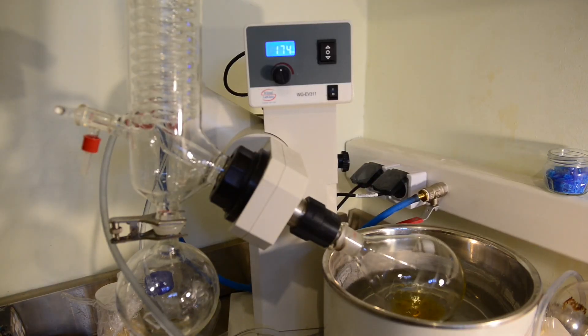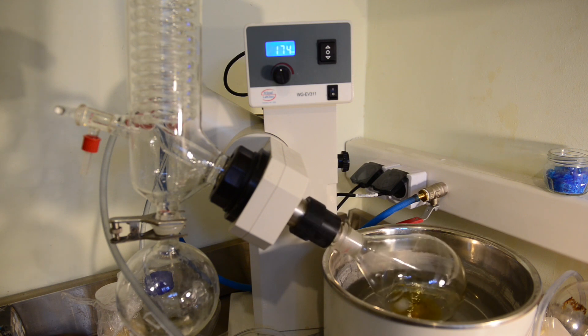Now we are starting to evaporate the chloroform from the mixture. We have decided to use a rotary evaporator. As we have filtered directly to the evaporation flask we can attach it straight to the rotovap.